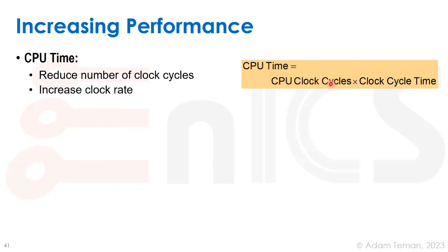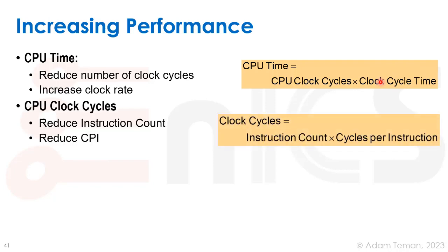To improve performance, we're going to try to take fewer clock cycles and reduce the clock cycle time, or increase the frequency of the clock. CPU clock cycles equals the number of instructions — our instruction count — times the cycles per instruction, also known as CPI. The reciprocal is IPC. Fewer instructions reduces the instruction count, and fewer cycles per instruction reduces the CPI, both of which reduce total CPU time.